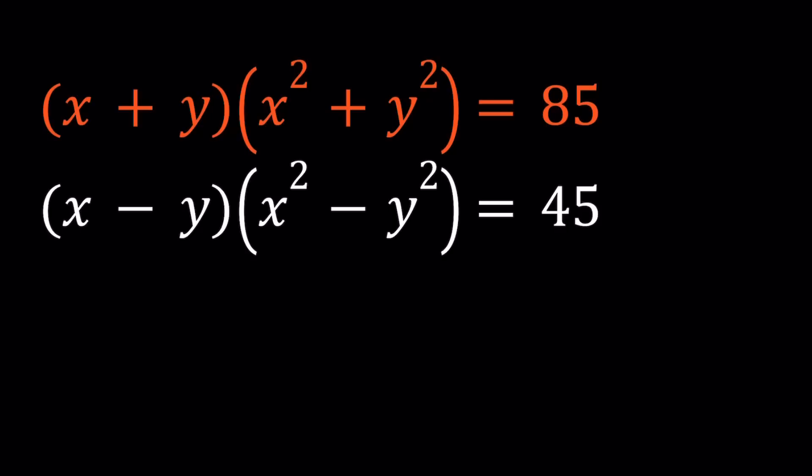So we have this system: x plus y, multiplied by x squared plus y squared, equals 85; and x minus y times x squared minus y squared equals 45. I'll be presenting two methods, even though there is probably a third and fourth method. Some people can guess and check quickly by looking at the factors of 85 and 45 — they have five in common.